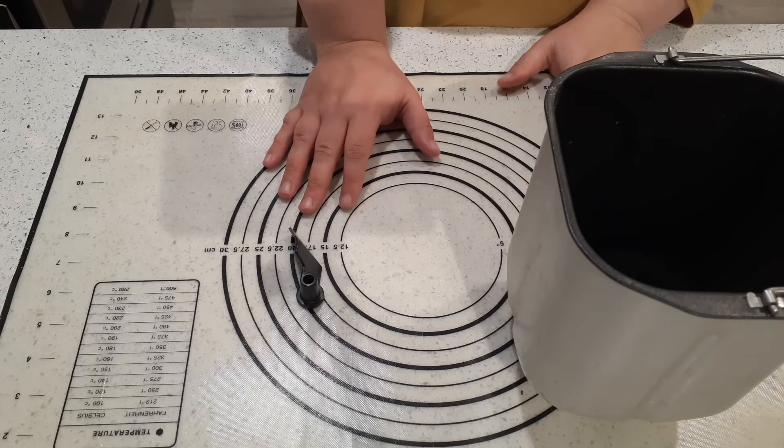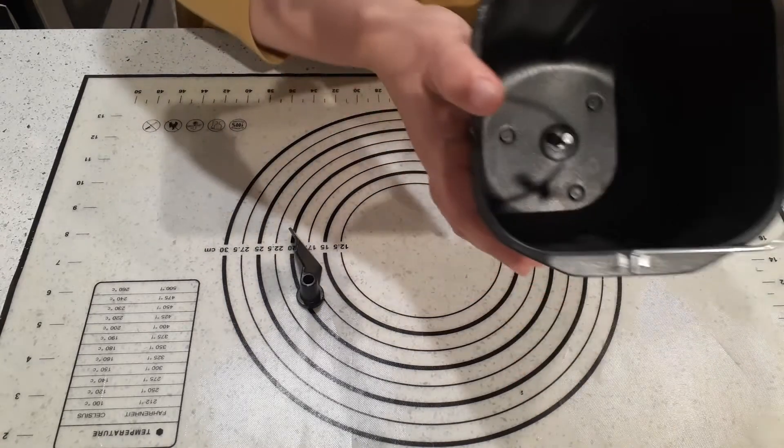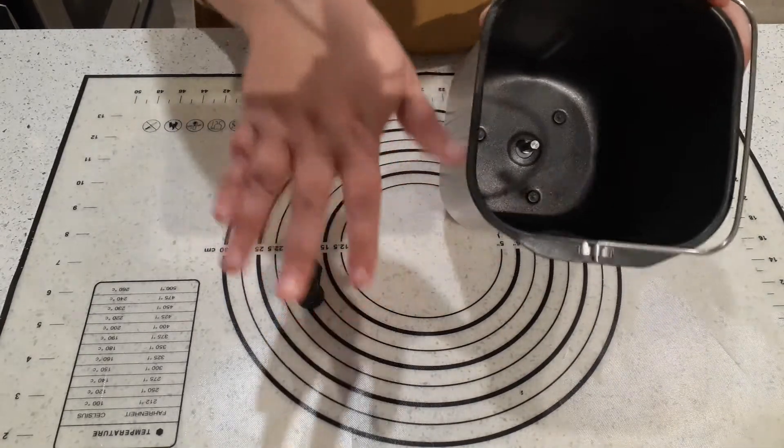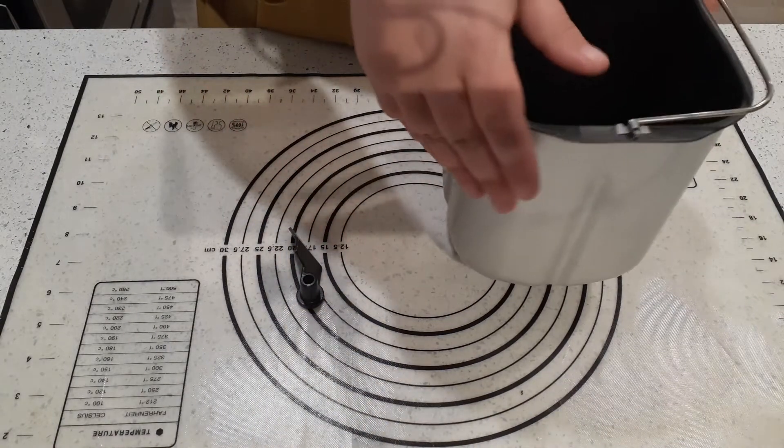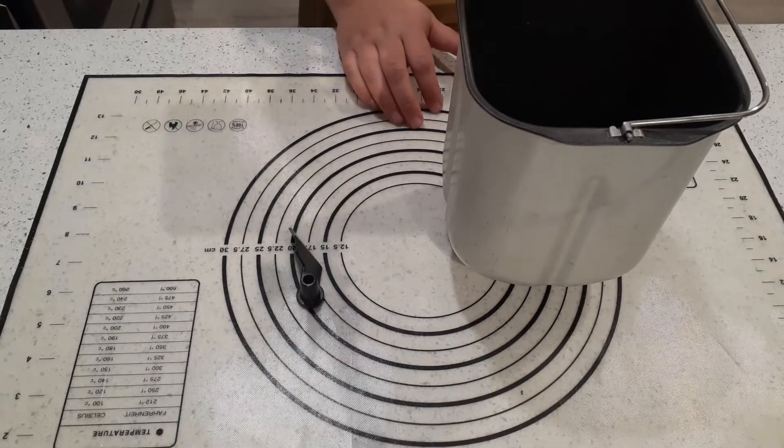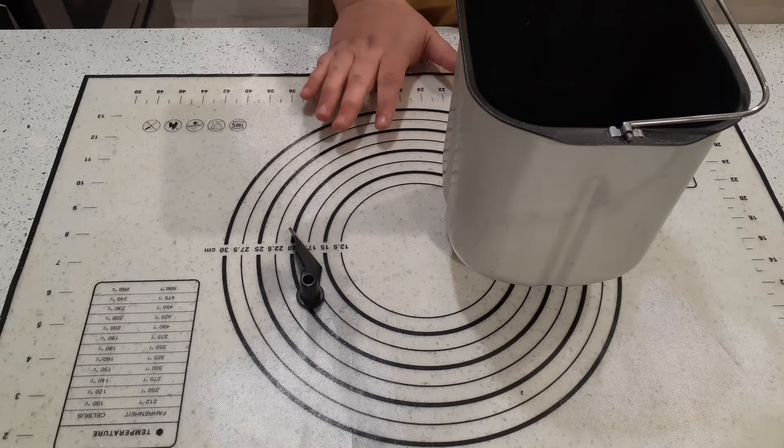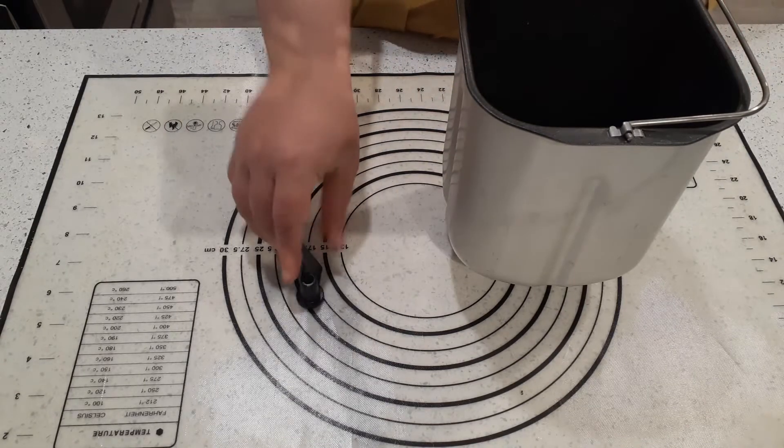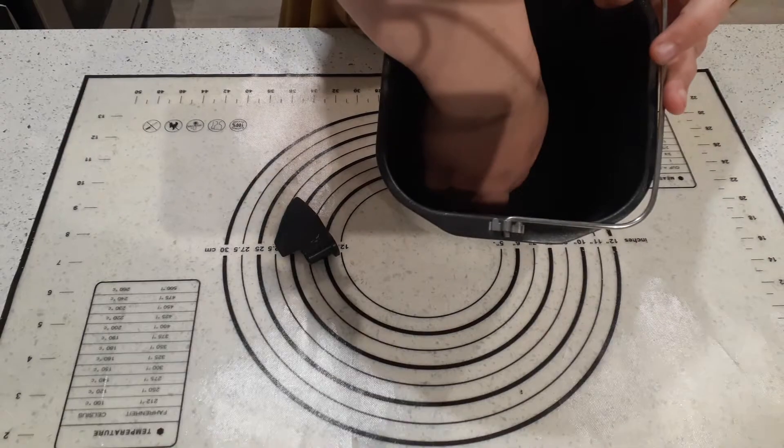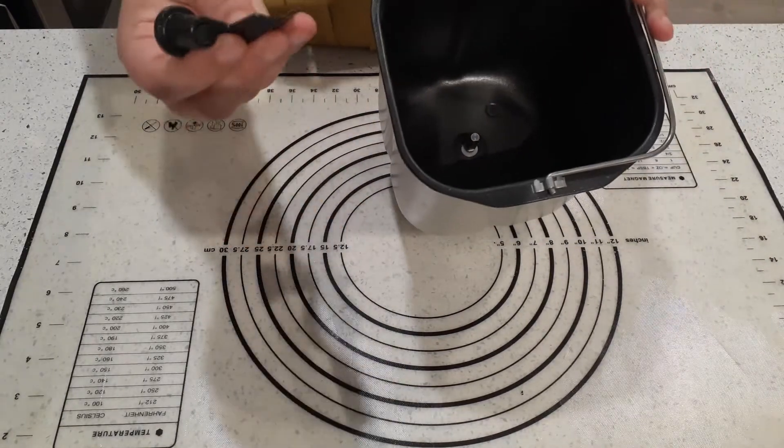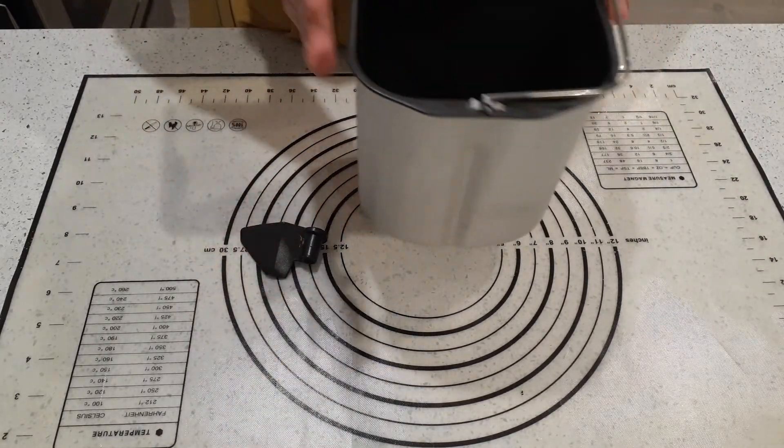Every bread maker is a little bit different, but there are absolutely some basics. First is they all come with a bread pan. It might be a bread pan like this that is a taller one, or it might be a more horizontal bread pan. I've had both. There's not a lot of difference between them. The horizontal ones typically have two paddles; this one only has one paddle down in the middle.